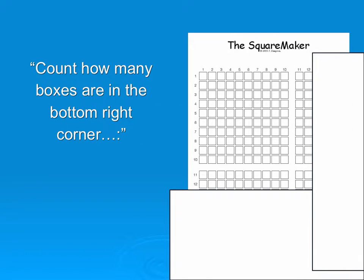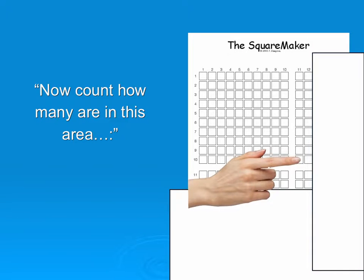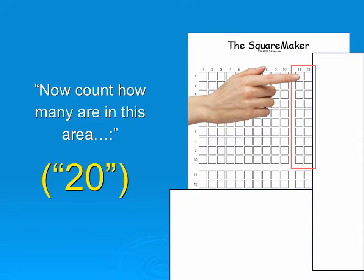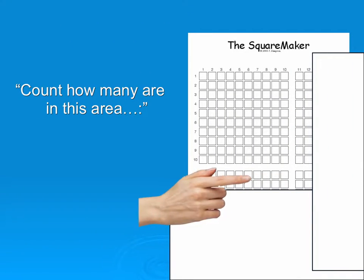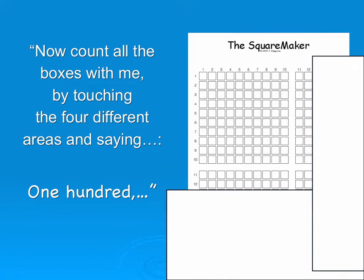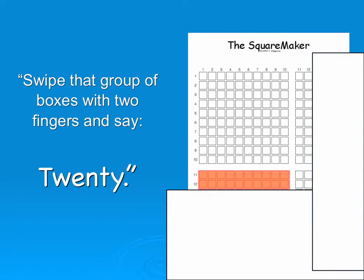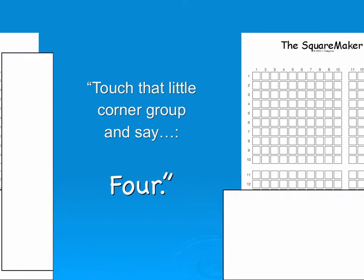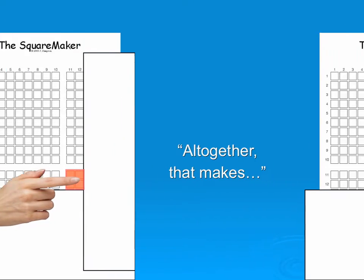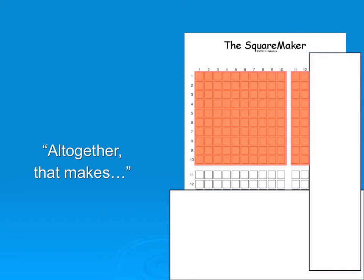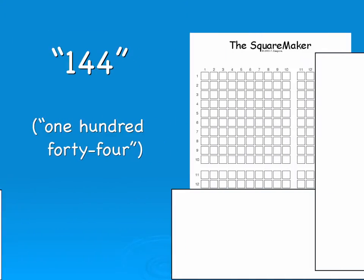Count how many boxes are in the bottom right corner. Now count how many boxes are in this area. Count how many are in this area. Now count all the boxes with me by touching the four different areas and saying 100. And then you swipe this group of boxes with two fingers, because there's two rows of 10, and say 20, 20, 4. Altogether that makes 144.